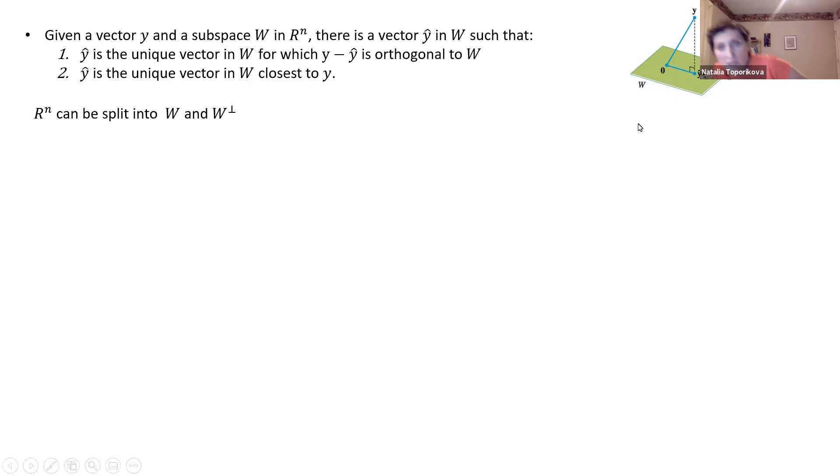In other words, we can think about it as we can actually split our R^n into two different subspaces. One of them is W, and the other one is the complementary orthogonal part of W, which we denote by this T letter flipped upside down.